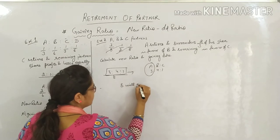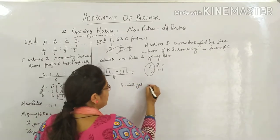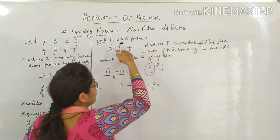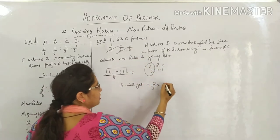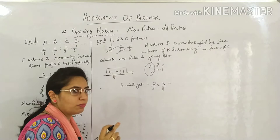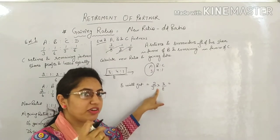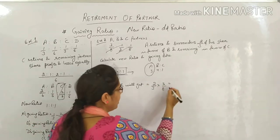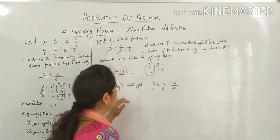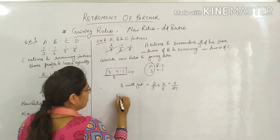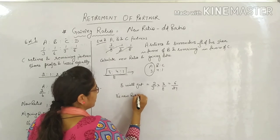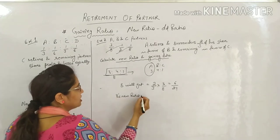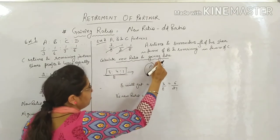B will get, or you can write B's gain, how much? 2 by 3rd of his share, meaning 2 by 3rd of his share. His share was this: 3 by 8. So 2 by 3rd of, 'of' means multiply, of his share - whichever word is said after 'of', we do that. His share was mentioned, so we took his share. 3 twos are 6, 8 twos are 24, so B will get this much. Now, B's new ratio will be: B's old share was 4 by 8, and they will get this much: 6 by 24. Taking LCM of 24: 8 threes are 24, 3 fours are 12, 12 plus 6 equals 18 by 24. Clear?